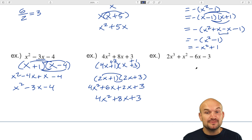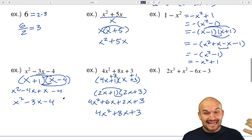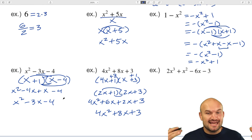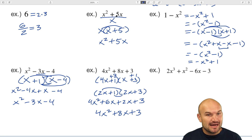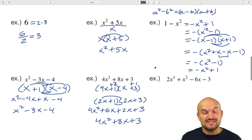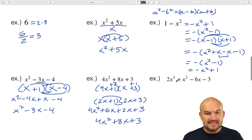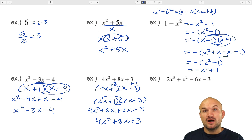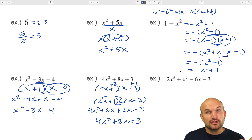Now let's look at a polynomial with four terms. When dealing with a polynomial of four terms, the idea is the same — we need to write the expression as a product. It won't be a difference of two squares because there are four terms, and we can't use the trinomial technique because it has four terms, not three. So we have to look at a different technique, and one common technique we can use is what we call grouping. We take four terms and group them into two different groups.